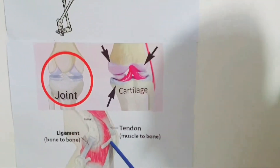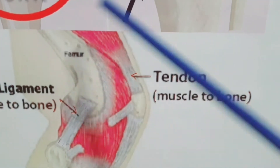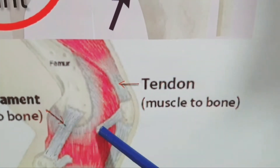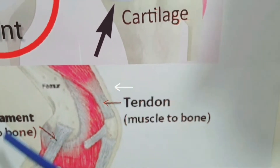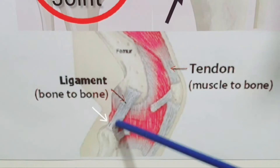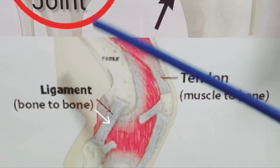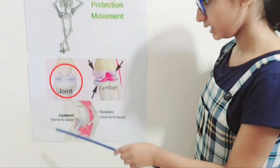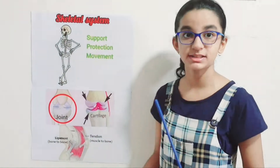Tendons — here you can see the picture of the tendon. It is a band of fibrous connective tissue that connects the muscle to the bone. Ligament is also a connective tissue that attaches bone to bone. Here you can see the picture of the ligament. This is the tendon and this is the ligament.